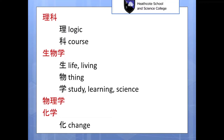I study Japanese myself, so I'm interested in the Japanese language. In Japanese, kanji — which are the characters used for the words shown here — have different meanings, and when put together they make a new meaning. There are four words shown here, and one of them is chemistry.